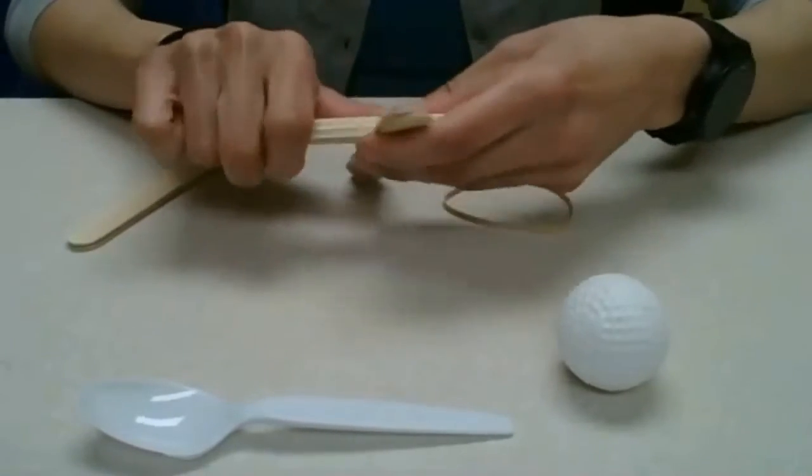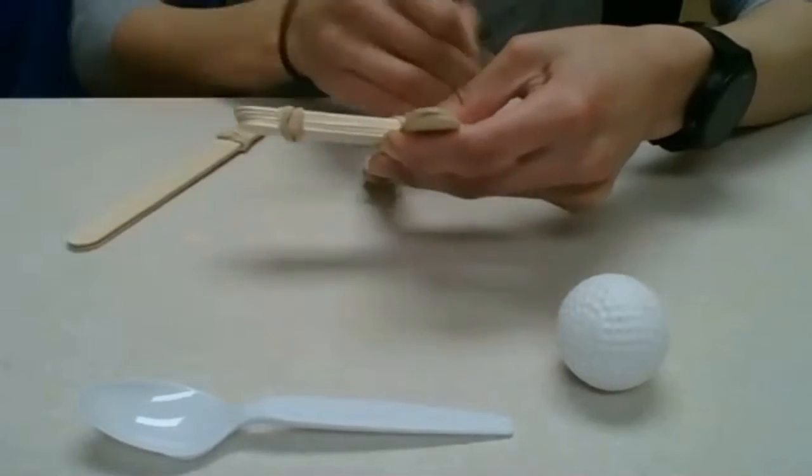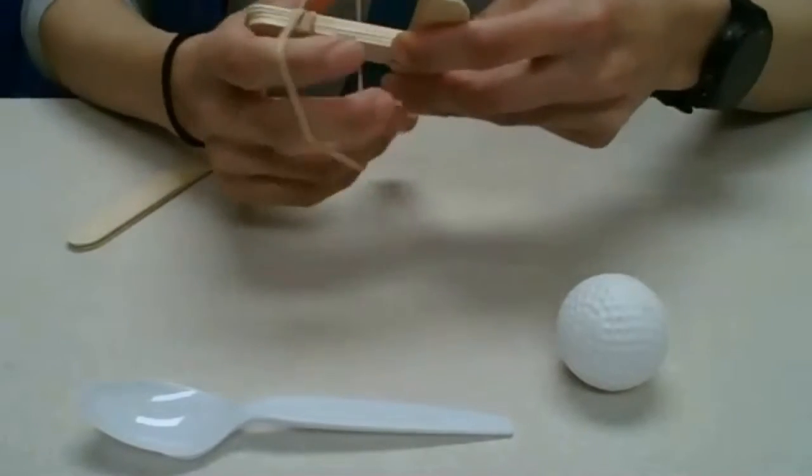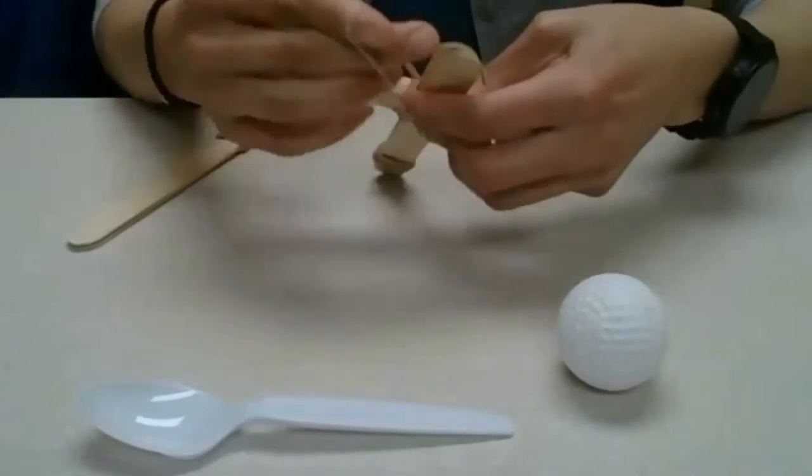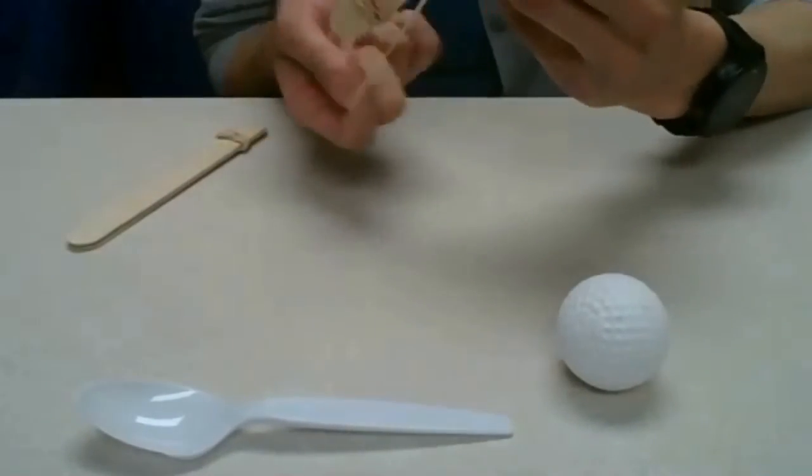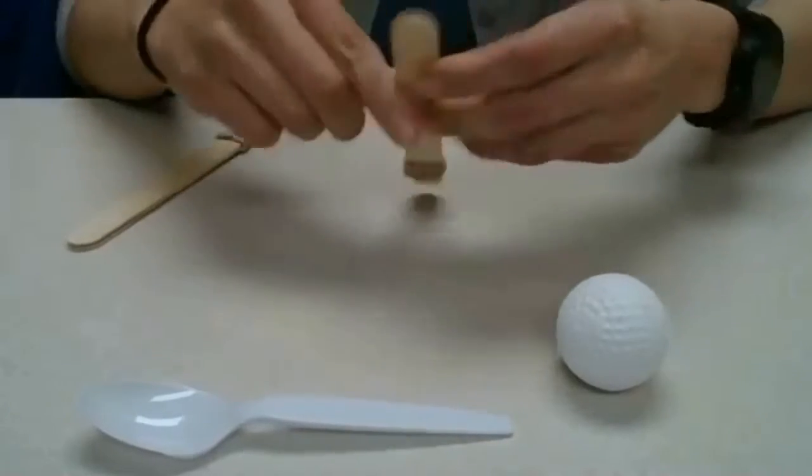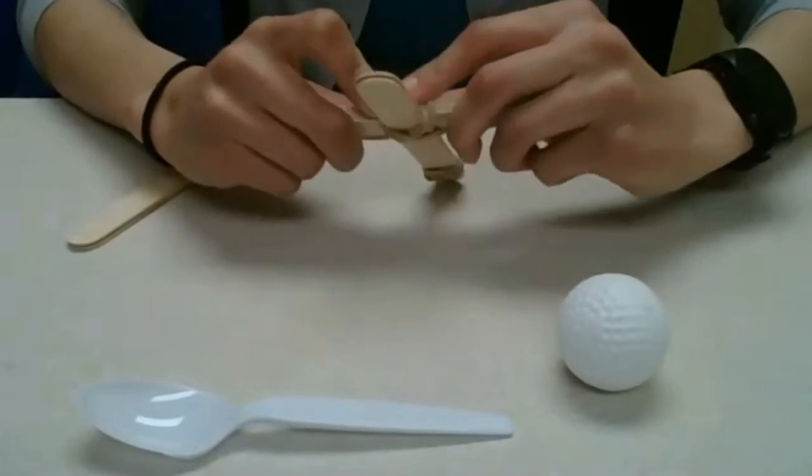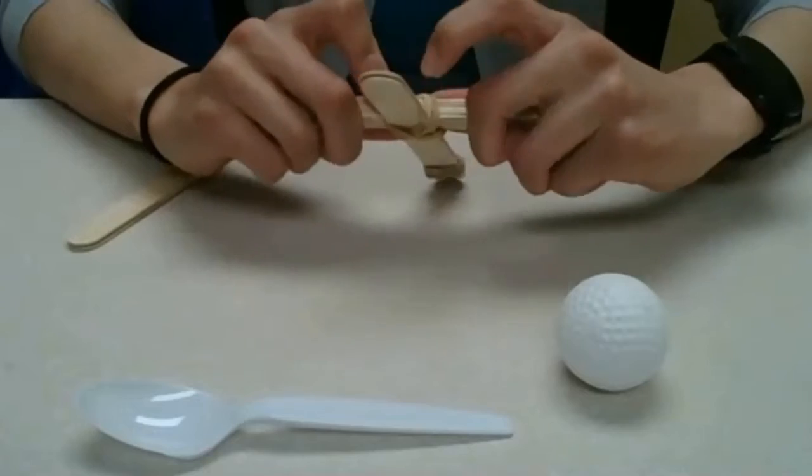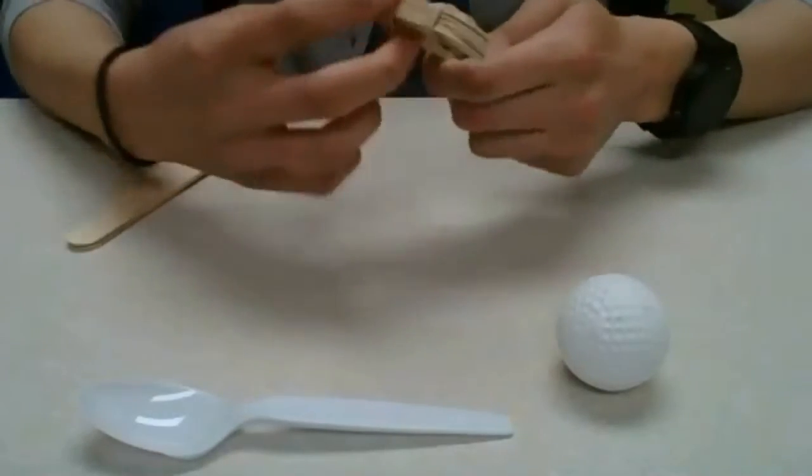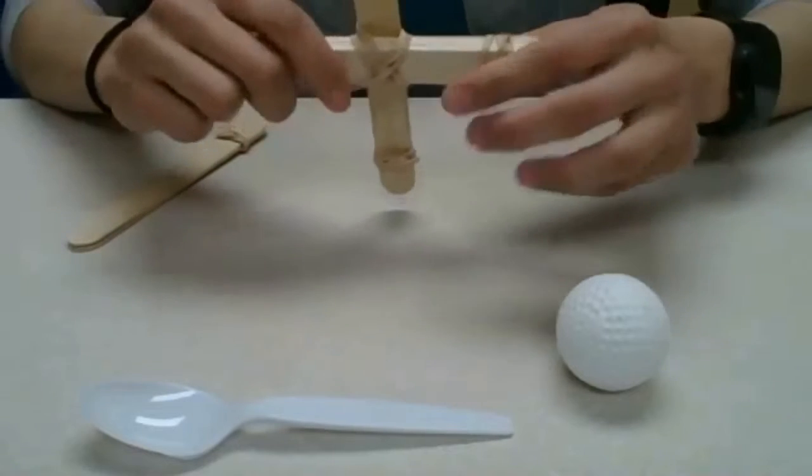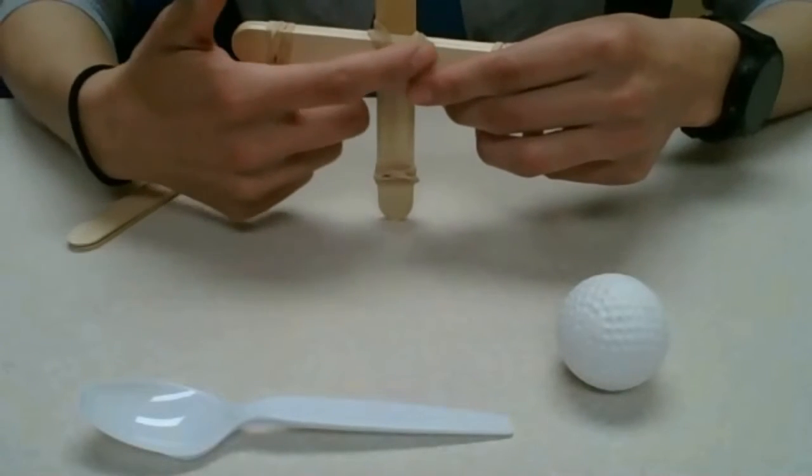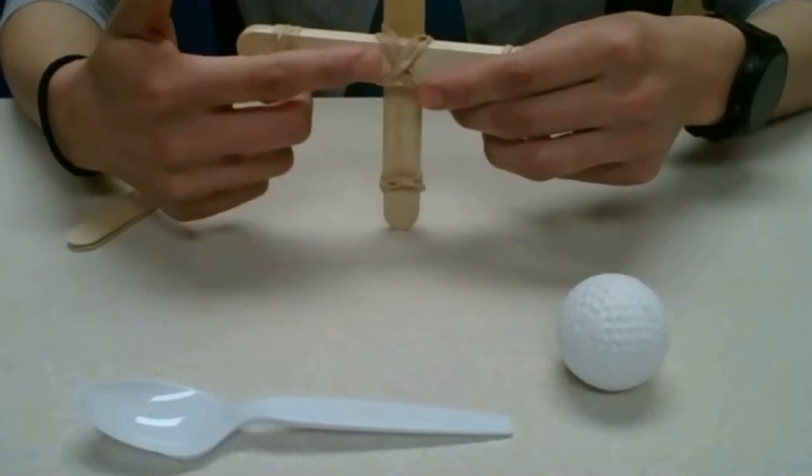And right now, it's not sturdy. So the five stack is not centered yet. Depending on how your rubber band is again, will determine how many times you're going to have to loop this around. But it looks like an X. There we go.